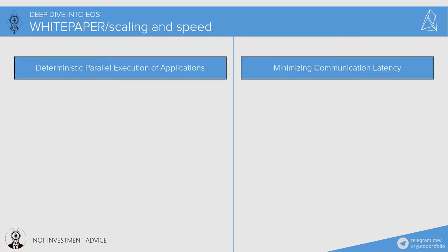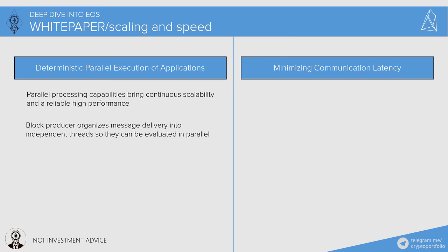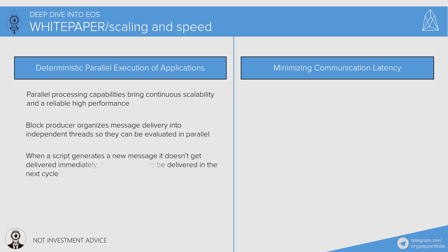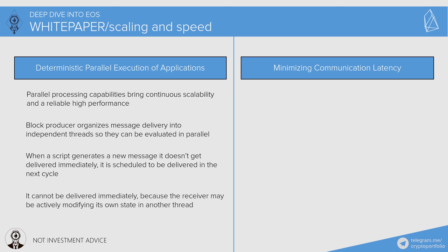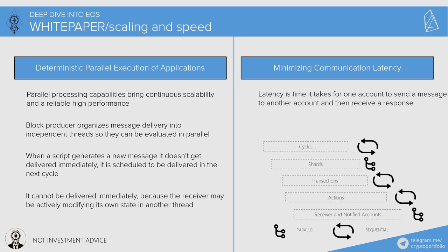How does EOS achieve scaling? Parallel processing capabilities bring continuous scalability and reliable high performance. Block producers organize message delivery into independent threads so they can be evaluated in parallel. When a script generates a new message, it doesn't get delivered immediately — it is scheduled for the next cycle — because the receiver may be actively modifying its own state in another thread. Latency is the time it takes for one account to send a message to another and receive a response. The goal is to enable two accounts to exchange actions back and forth within a single block.